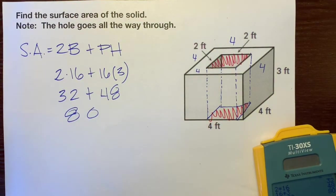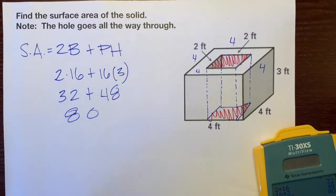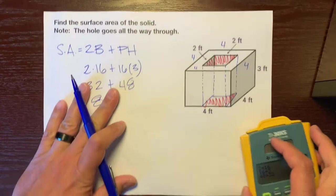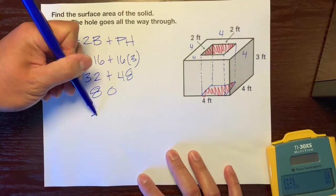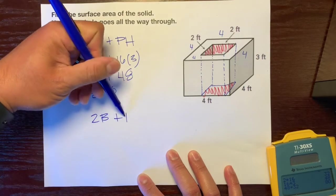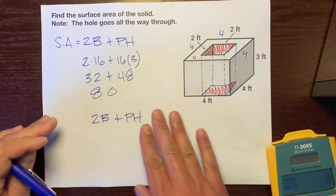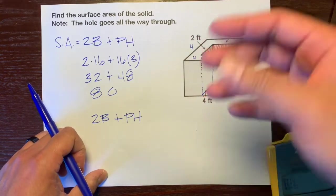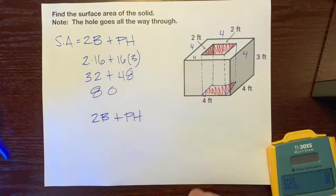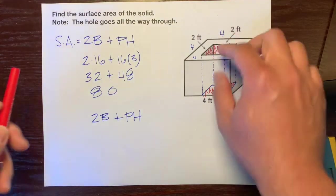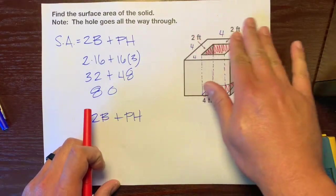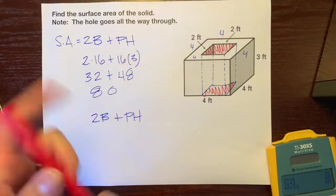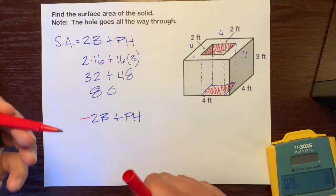If we use our same formula, which is 2B plus PH, we're going to apply this to this inner prism, which is the hole. Remember, these take away from the surface of the outer prism, so we'll make this a negative.